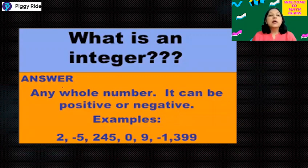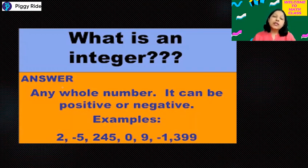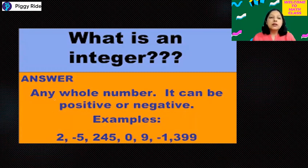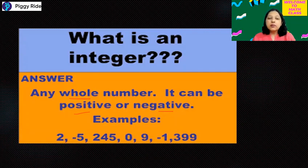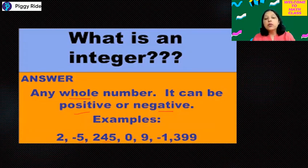Hello everyone, today in this math tutorial we are going to discuss something about integers. Integers is a very important topic related to maths. An integer is a whole number — it can be positive or it can be negative. So that means starting with 0, or before 0 also. Whatever positive or negative numbers we get, we call them integers — like 2, minus 5, 245, 0, 9, minus 1 — all are examples of integers.